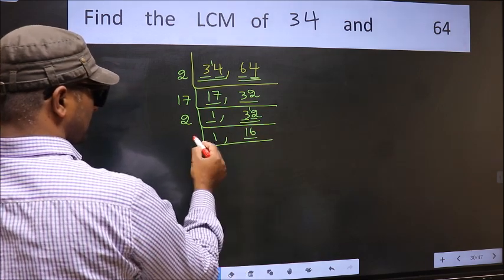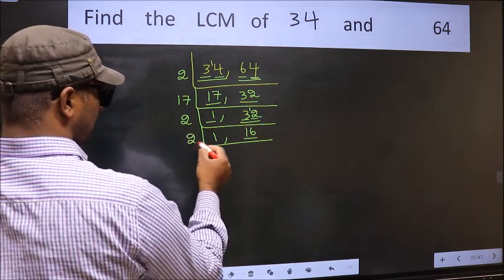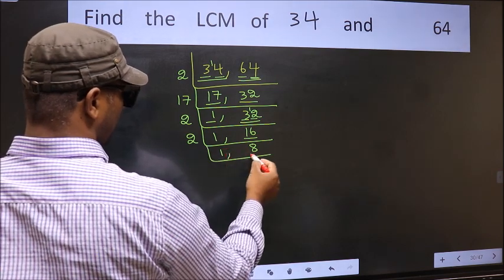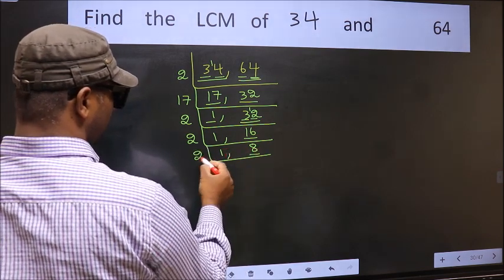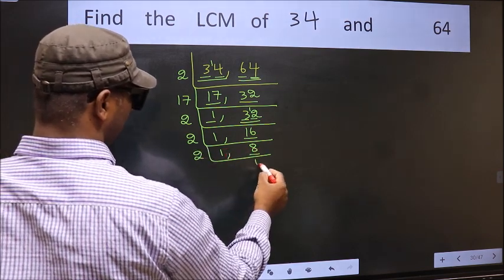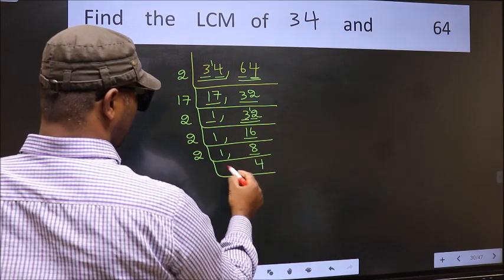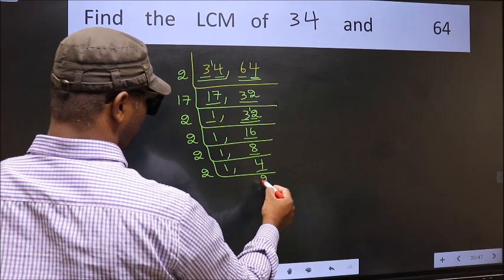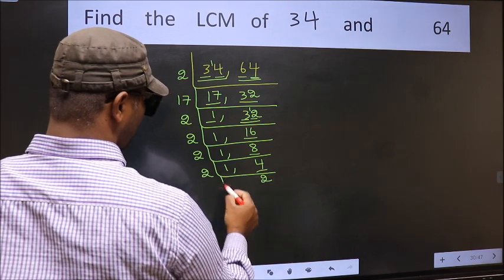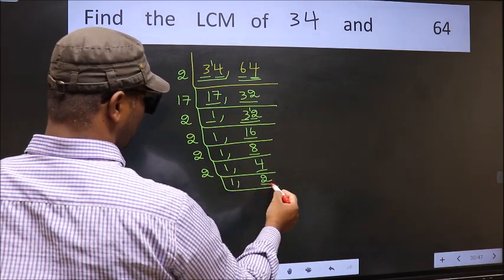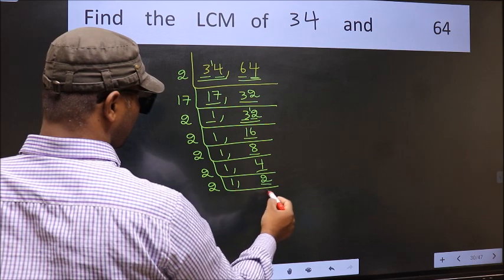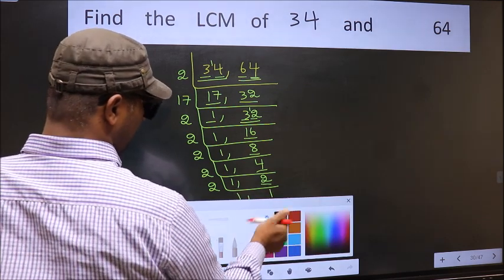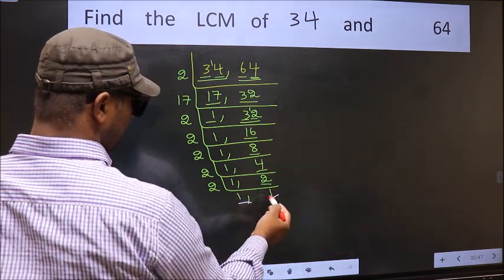Now here we have 16. 16 is 2 times 8. Now we have 8: 8 is 2 times 4. Now we have 4: 4 is 2 times 2. Now we have 2; 2 is a prime number, so 2 times 1 is 2. So we got 1 in both places.